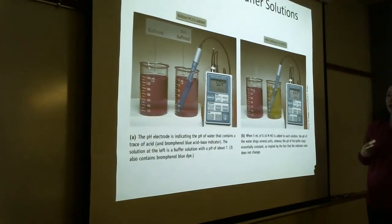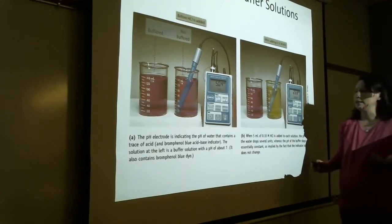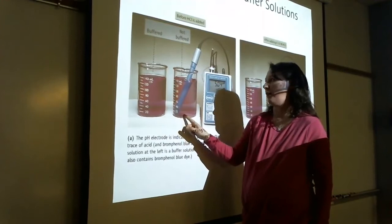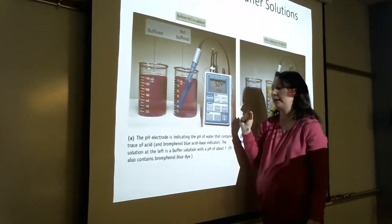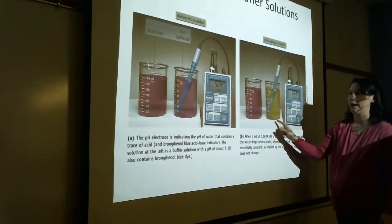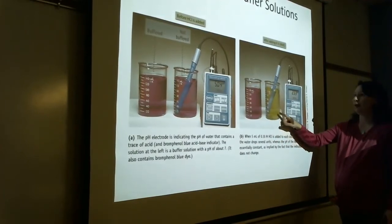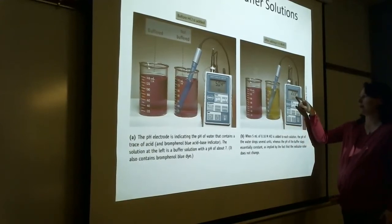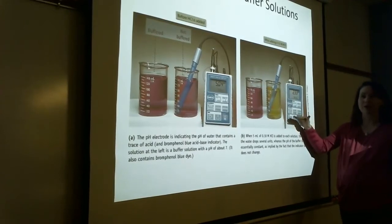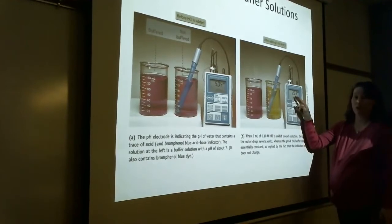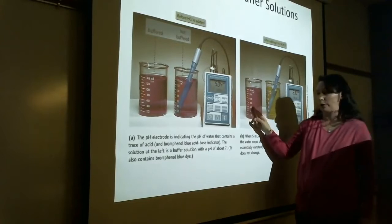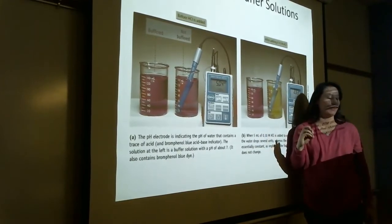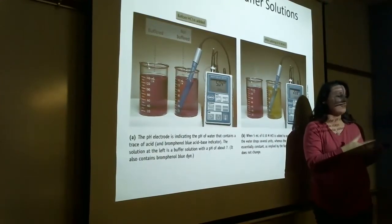In lab tomorrow you'll investigate buffering capacity. Here are two solutions colored pink with indicators so you can see pH changes. One is buffered and one is not. Both start at pH 5.04. When we add acid to both, the buffered solution's color and pH didn't change, whereas the unbuffered one dropped down to 2.33. The pH scale is logarithmic, so going from 5 down to 2 means the acidity increased dramatically. The buffer contained a base that consumed all the added acid.